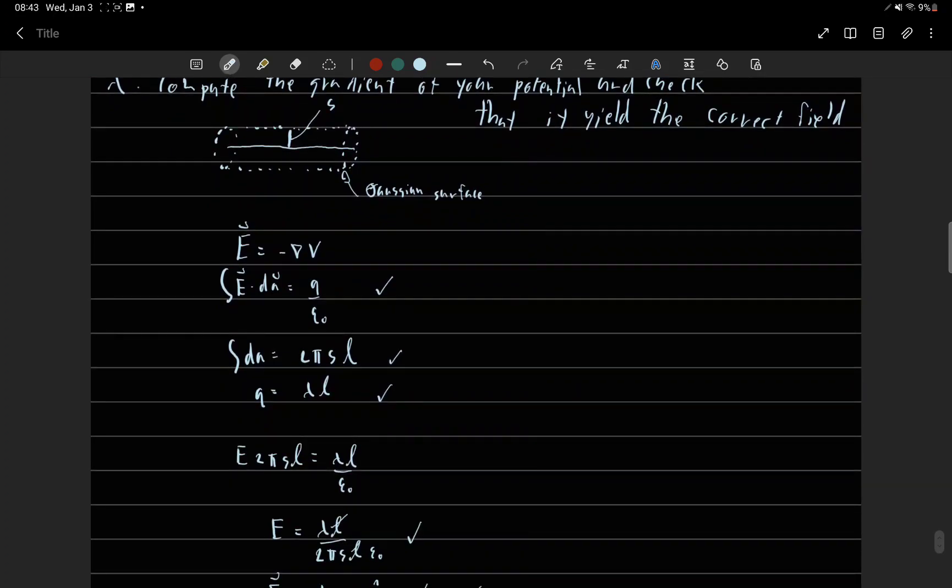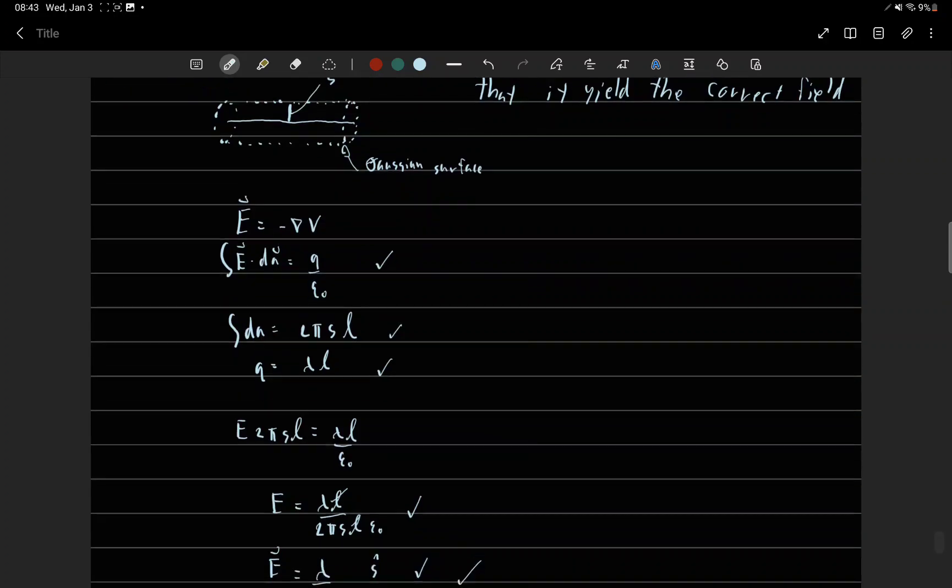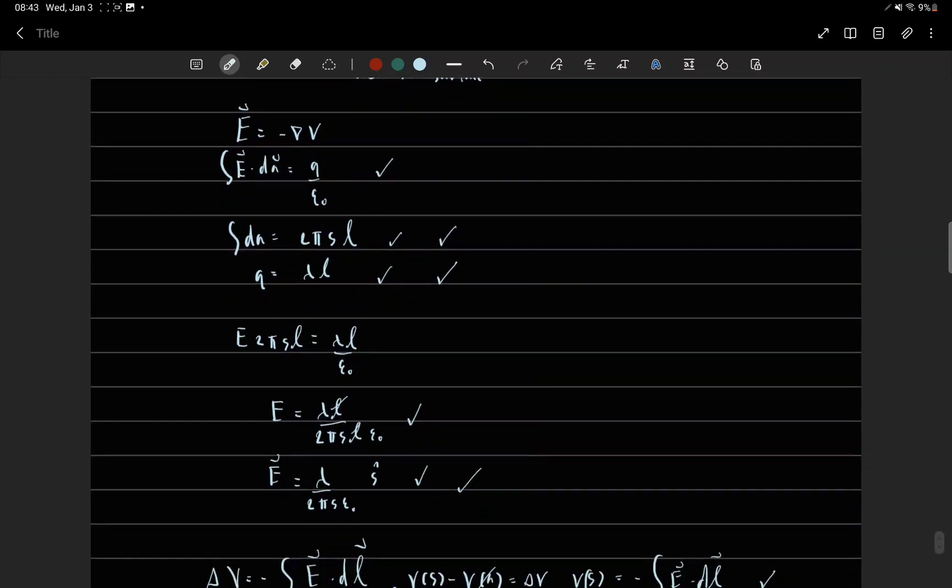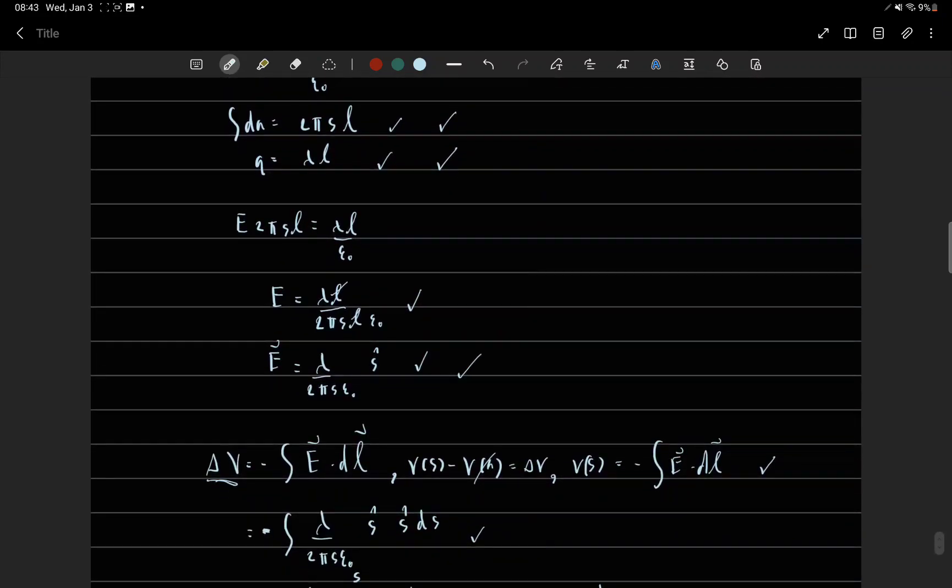Gauss's law is integral E·dA equals Q over epsilon zero, and integral dA equals 2πsl, and Q equals lambda l. So we can find the electric field for this problem.